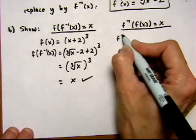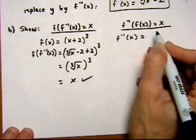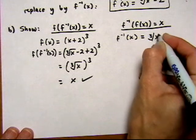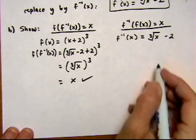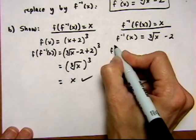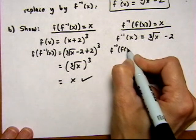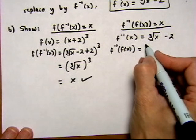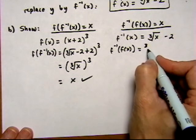Let's start with f inverse of x is equal to cube root of x minus 2. And what we want to find is f inverse of f of x. So what if we put f of x as the input here to the inverse function?